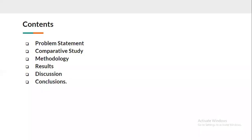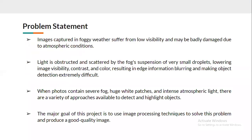Here are the contents we are going to highlight: problem statement, comparative study, methodology, research discussion, and conclusions. The problem statement of our project is: images captured in foggy weather suffer from low visibility and may be badly damaged due to atmospheric conditions. When photos contain fog, huge white patches, and intense atmospheric light, there are a variety of approaches available to detect and highlight objects. The major goal of our project is to use image processing techniques to solve this problem and produce a good quality image.